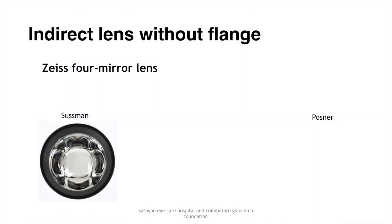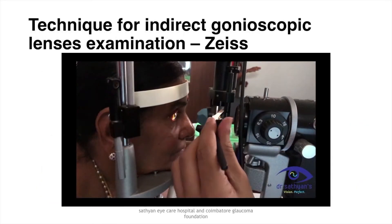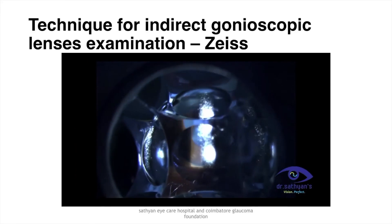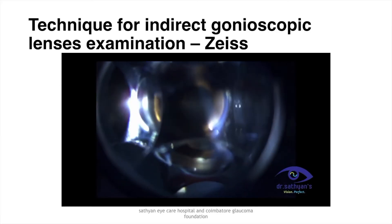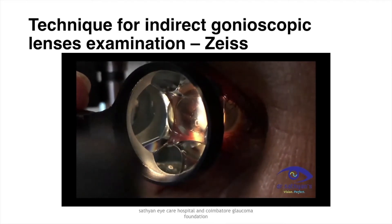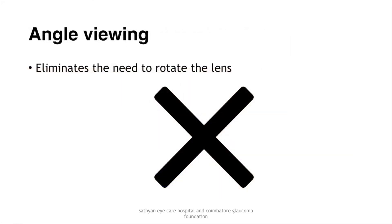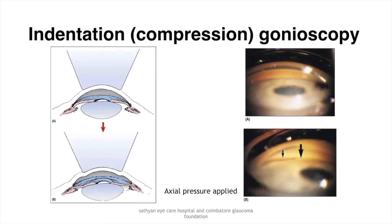Both the Sussman and the Pozner indirect lens don't possess a flange. With these lenses, the examination technique involves anesthetizing the cornea, followed by placement of the lens on the cornea exposed within the interpalpebral aperture; the patient's own tear film is used as coupling fluid. The diamond of the lens is oriented either as an X or as a plus, and lens rotation is eliminated as all four quadrants can be viewed simultaneously. An axial pressure is applied for performing indentation gonioscopy.